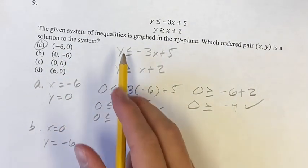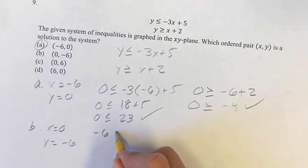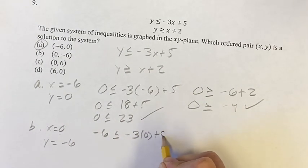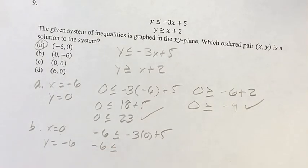Doing the same thing, plugging in x and y, we have here negative 6 is less than or equal to, negative 3 times 0 plus 5. Negative 6 is less than or equal to, negative 3 times 0 is 0 plus 5. Negative 6 is less than or equal to 5. This is true.